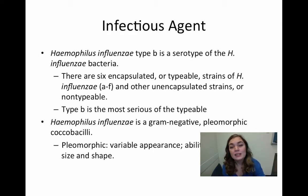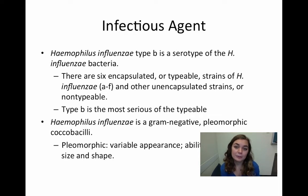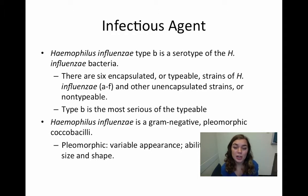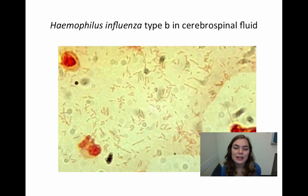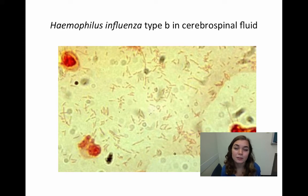Haemophilus influenzae is a gram-negative pleomorphic coccobacilli bacteria. Pleomorphic means that it has the ability to change its shape and its cell size, which is pretty cool. This is a gram stain of Haemophilus influenzae type B in cerebrospinal fluid, so you can get an idea of the shape of the bacteria.